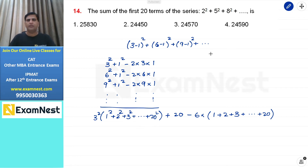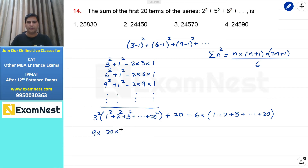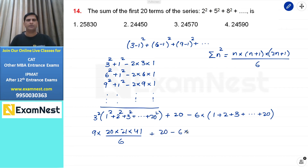यहाँ पर हमें इसका formula मालूम है। अगर sigma n square हमें निकालना होता है, इसका answer होता है n into n plus 1 into 2n plus 1 whole divided by 6। तो अगर हम n की जगह 20 इस formula में put कर दें: 9 into 20 into 21 into 41 divided by 6, plus 20, minus 6 into 20 into 21 divided by 2।